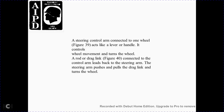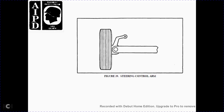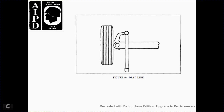Figure 39 acts as the lever to handle control of the wheel, moving the turn of the wheel with the rod called the drag link. Whenever the control arm leaves the back of the steering arm, the steering arm pulls the drag link and turns the wheel. Figure 39 shows the steering control arm. Figure 40 shows the drag link.